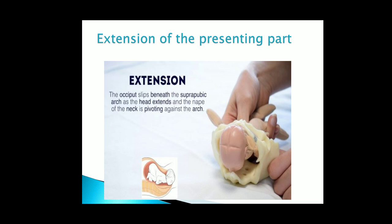Extension of the presenting part: the occiput slips beneath the suprapubic arc as the head extends and the nape of the neck pivots against the arc.